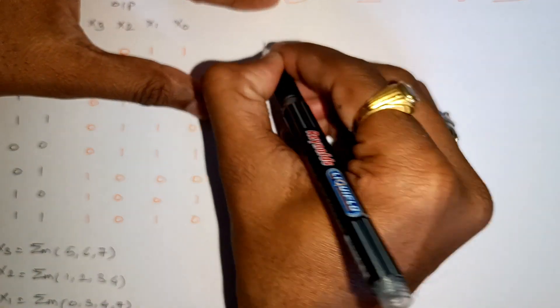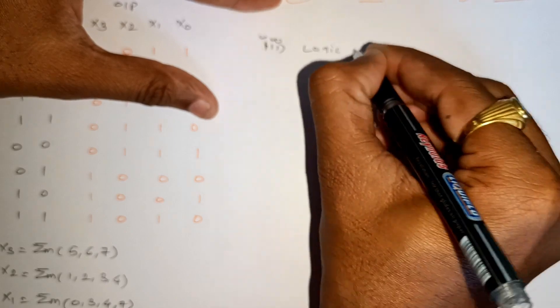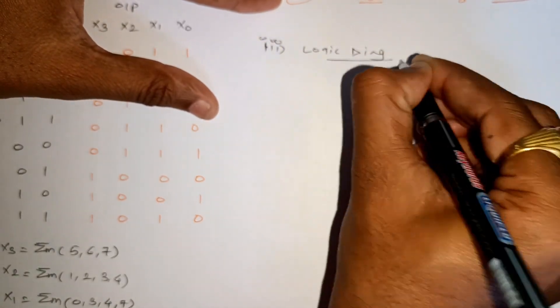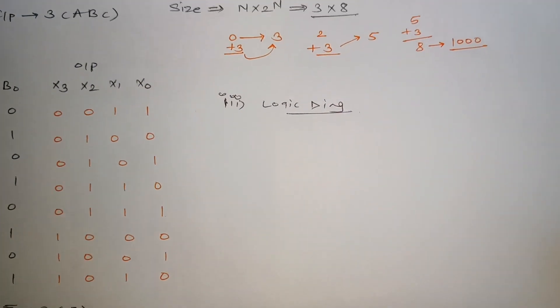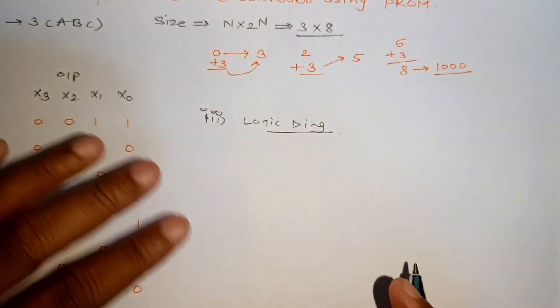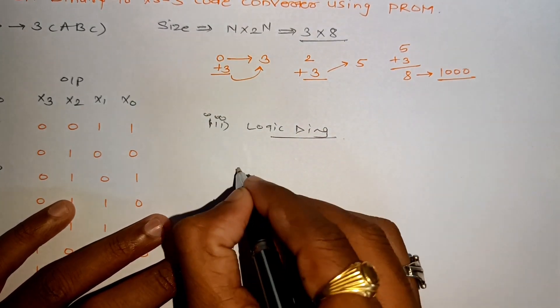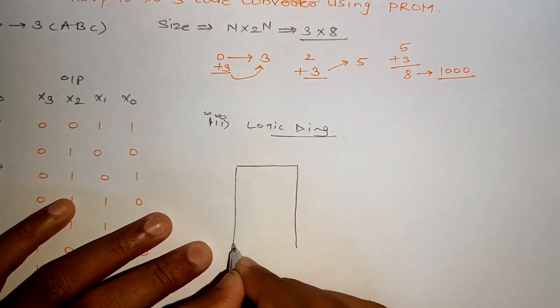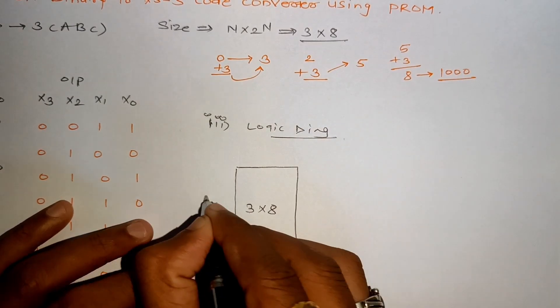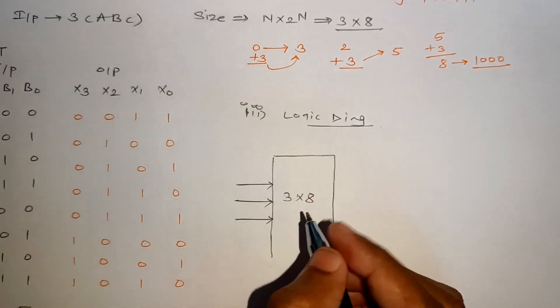So let's go for the third step as logic diagram. So the first step will be, I will be drawing a decoder of size 3 by 8. So here it is. We have a decoder of 3 by 8 size with inputs B2, B1, B0.